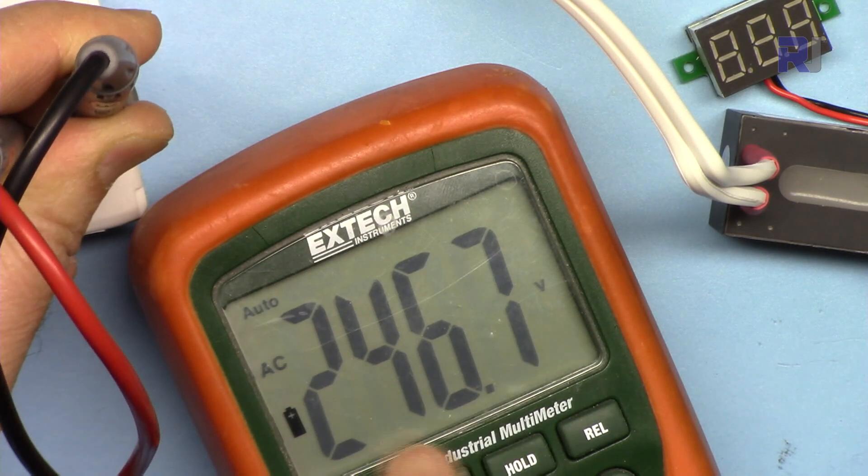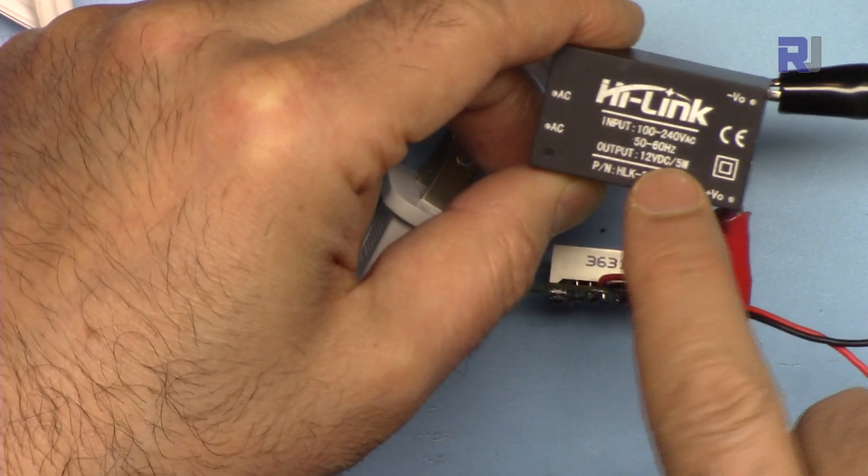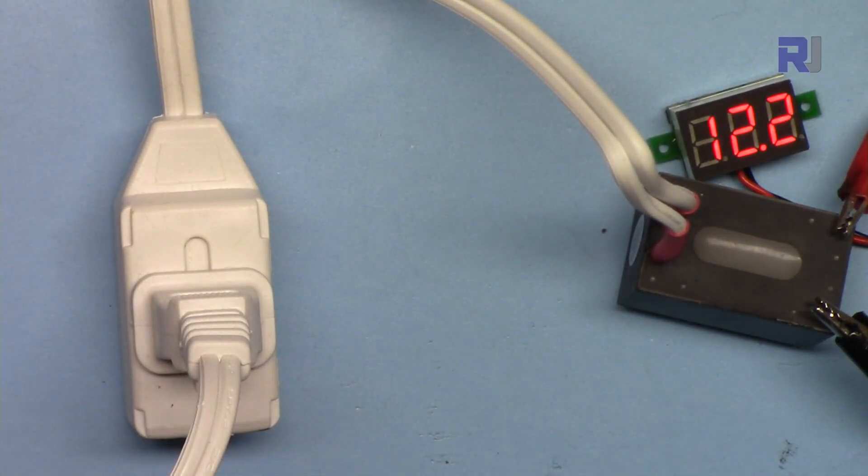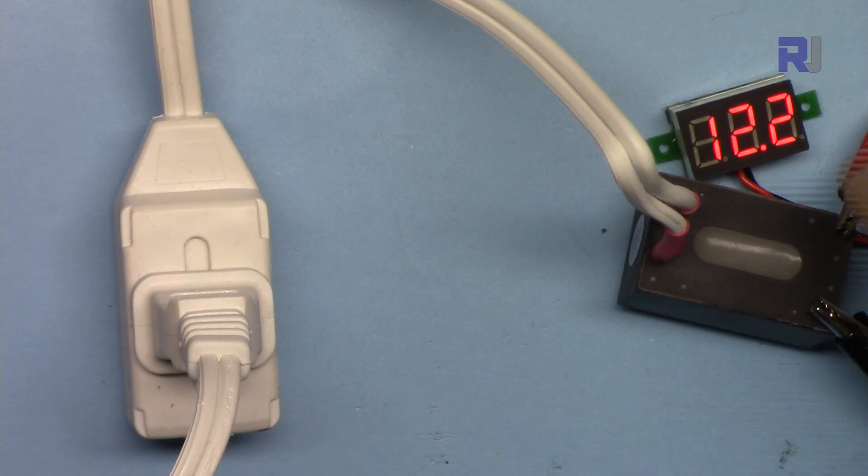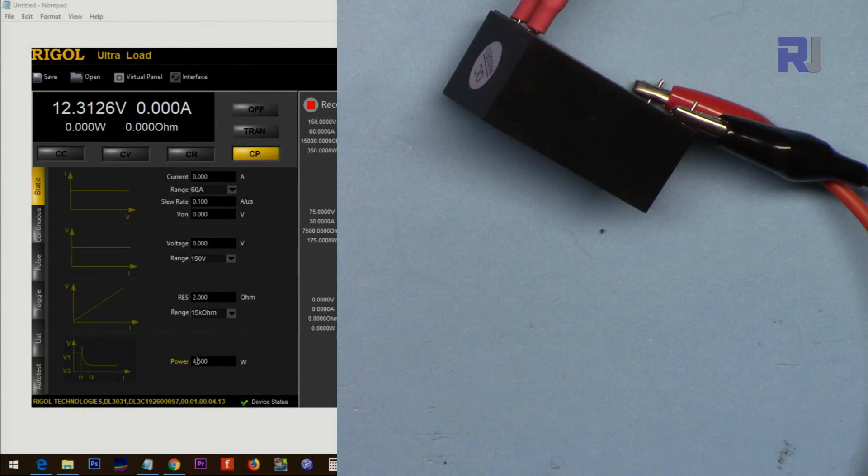Actually it's 246 volts AC, this is the 12 volts module. We got 12 volts, the load is connected but not turned on. Let's connect it with 5 watts. Now it's 5 watts running and as you can see the current shows 0.4 ampere, 5 watts at 12.3 volts output.